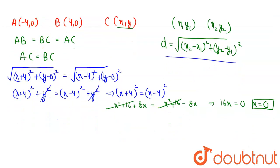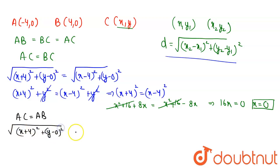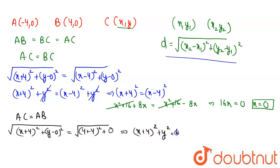Now applying the distance formula for AC = AB. AC = √[(x + 4)² + y²] and AB = √[(4 + 4)²] = √64 = 8. Squaring both sides: (x + 4)² + y² = 64. Substituting x = 0: 16 + y² = 64, so y² = 48.